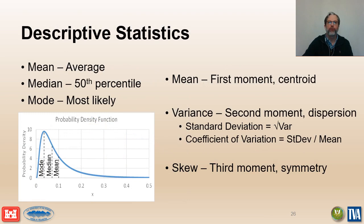Random variables can also be summarized using descriptive statistics that tell us something about the characteristics of the probability distribution. The mean, median, and mode are all measures of the central tendency of the variable. The mean is the first moment or centroid of the probability distribution and is the value that will occur on average. The median divides the distribution into two equally likely parts, meaning half of the values will be greater and half will be less than the median. The mode is the value with the greatest probability of occurring — it is the most likely value.